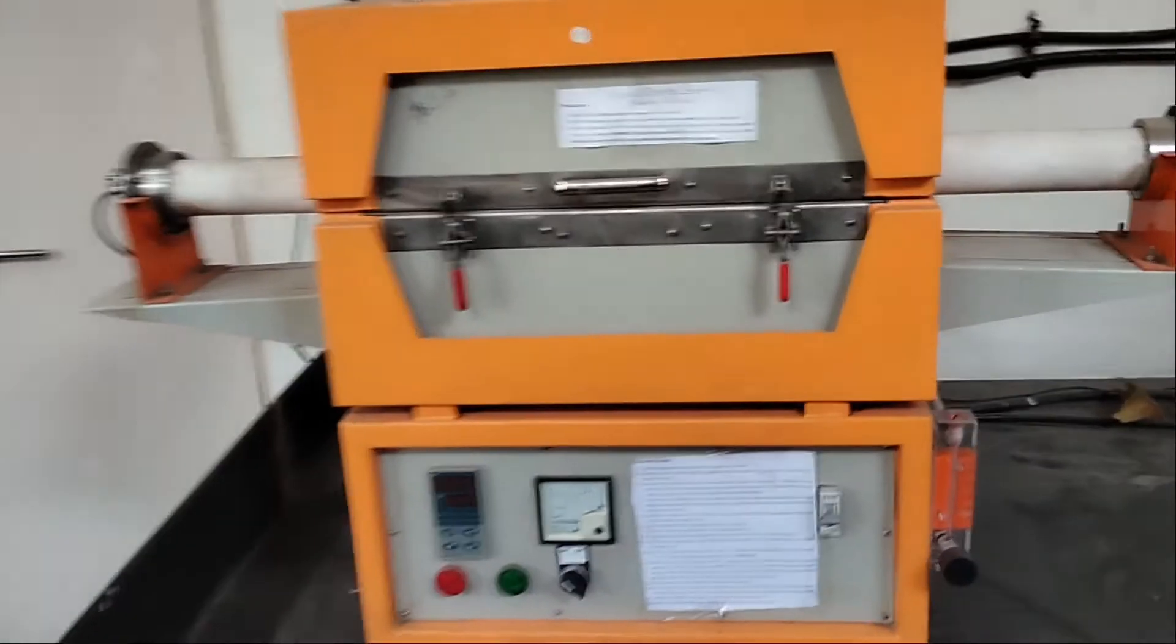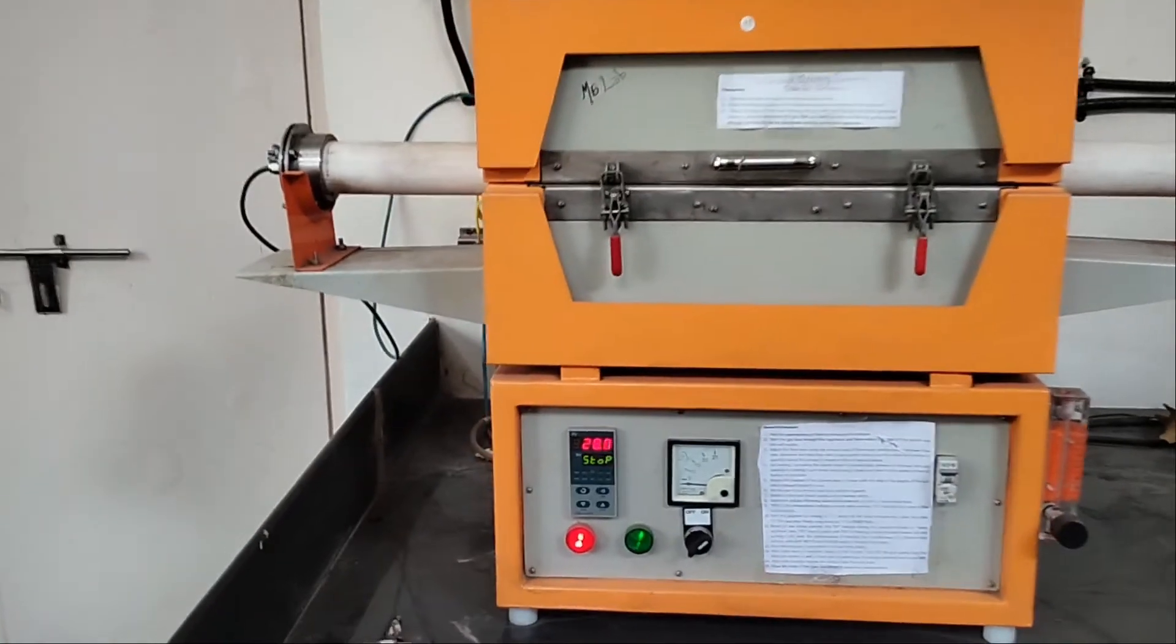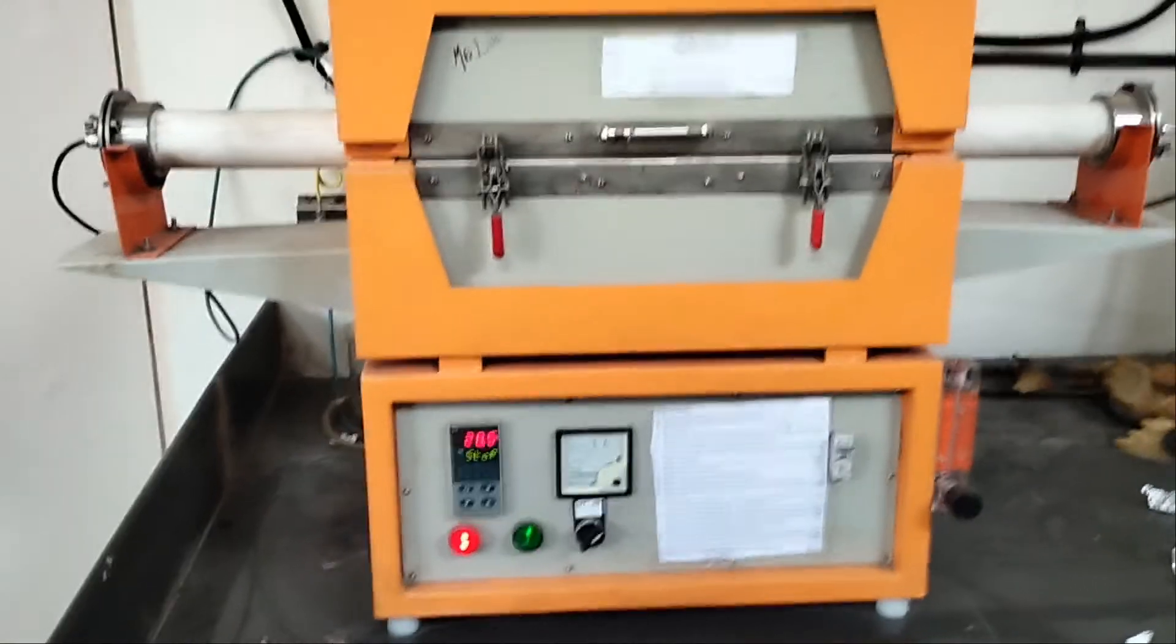Now once everything is set and the flow is established, you can turn on the tube furnace. This display will come on, and the program has to be given manually in that system.